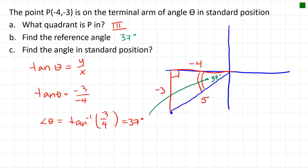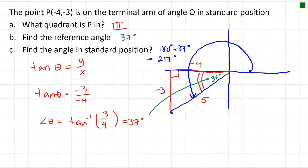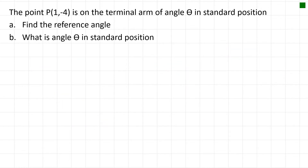Finding the angle in standard position means starting from the positive x-axis and going all the way around to the terminal arm. That's 180 degrees plus 37 degrees, so the angle in standard position is 217 degrees.